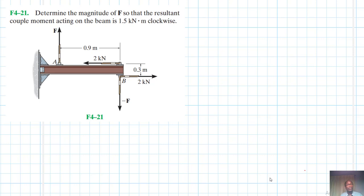Hello, I welcome you all. The problem reads: determine the magnitude of F so that the resultant couple moment acting on the beam is 1.5 kilonewtons meter clockwise. All right, so let's start working on the problem.